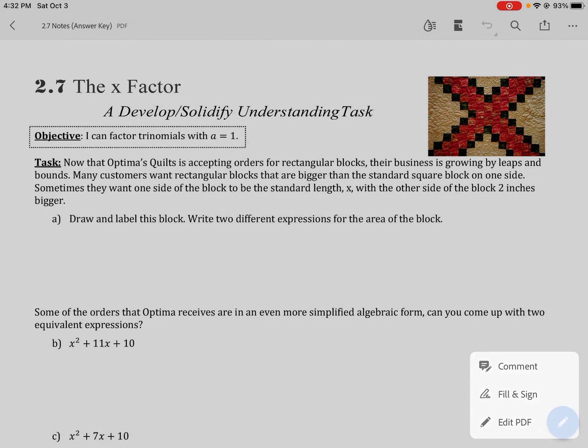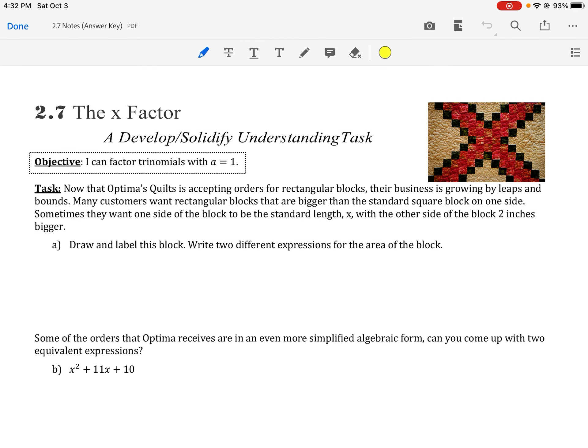Okay, we're going to continue factoring today. In particular, today we're factoring trinomials, which means things that have three terms, with A equal to one. So meaning they're not having a number out front necessarily.